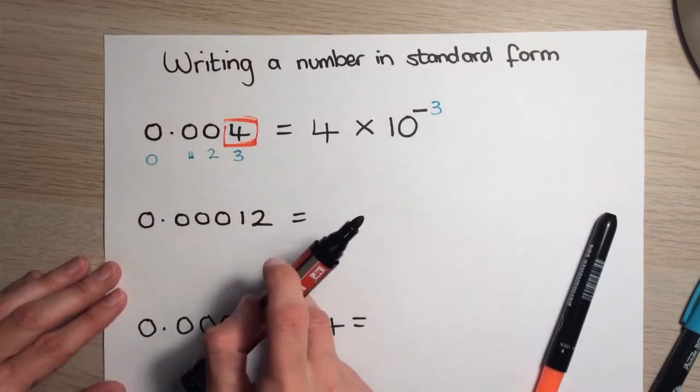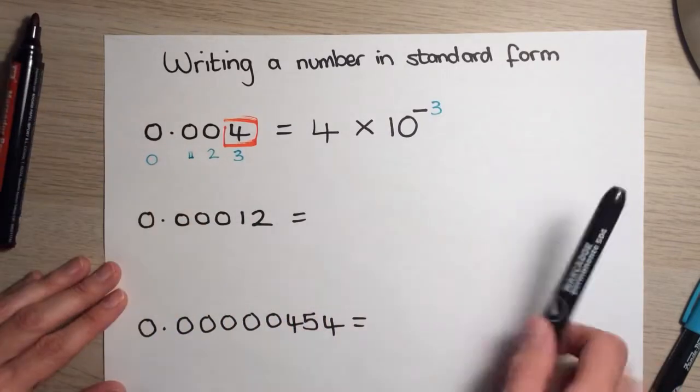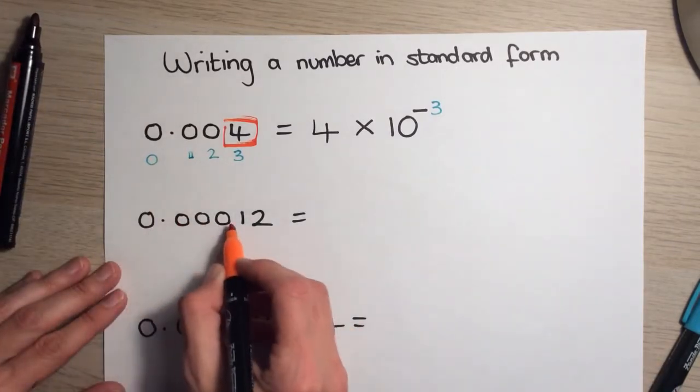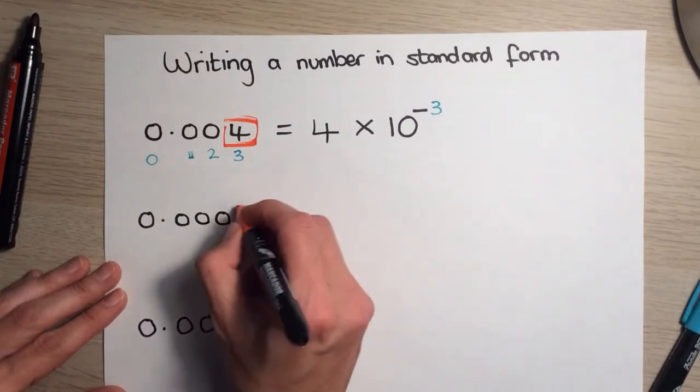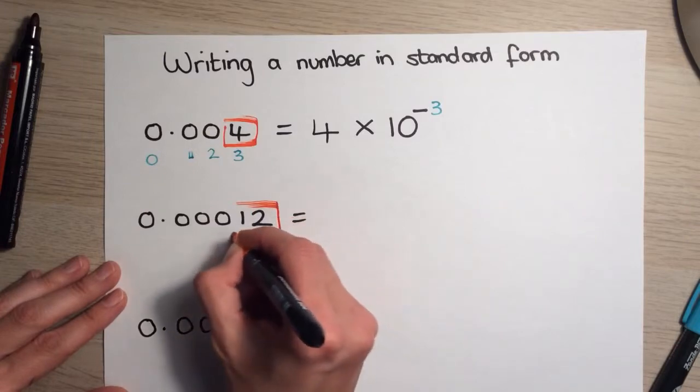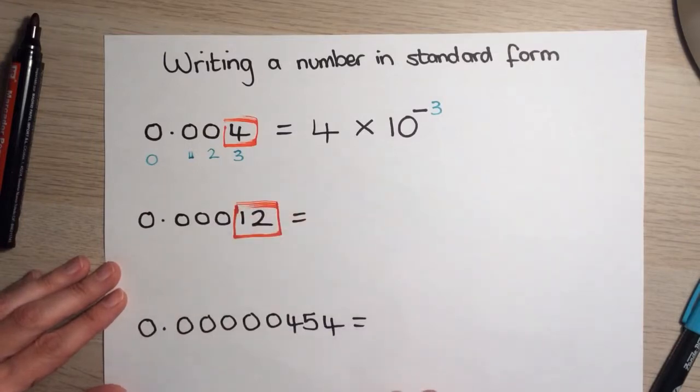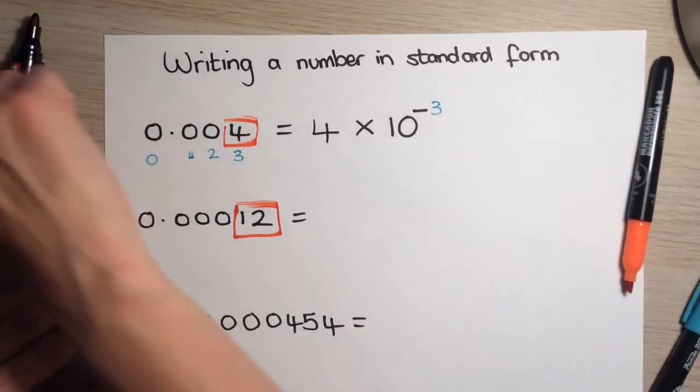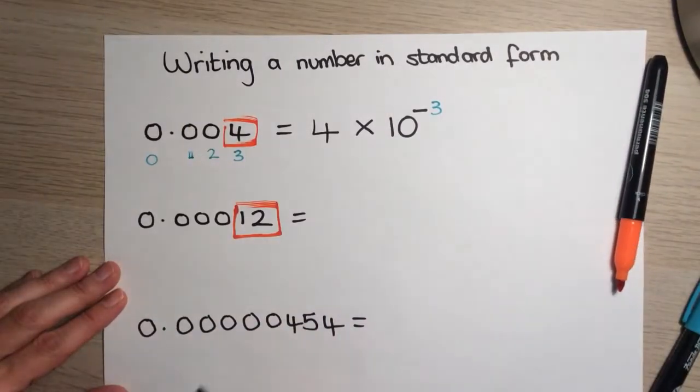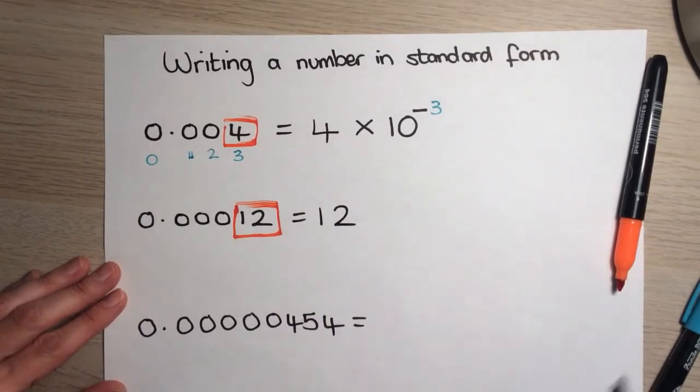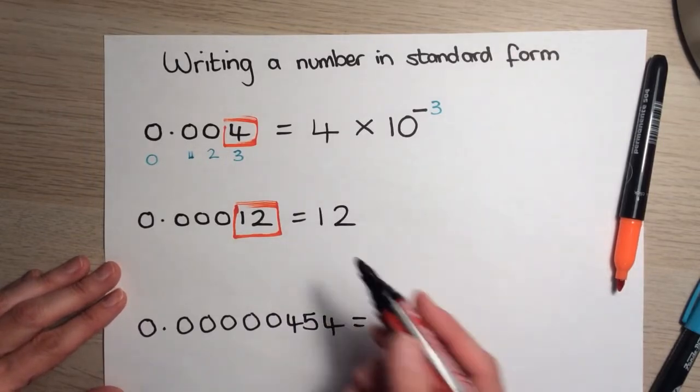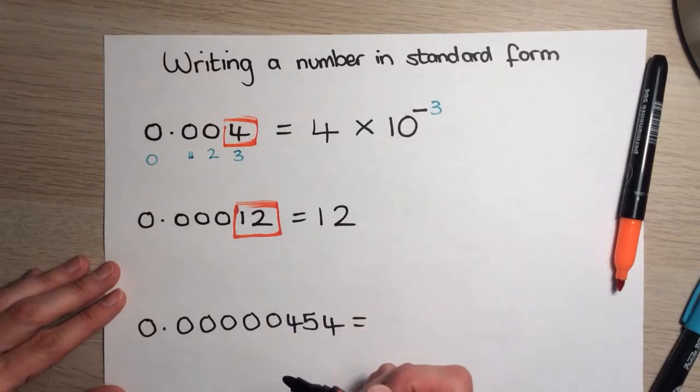Now, moving on to the next example. I'm going down the number until I get to the first digit that is not 0. And I'm going to put a box around the numbers that are non-0 after all the 0s. So, I've got 1 and 2. And I'm going to write that there.